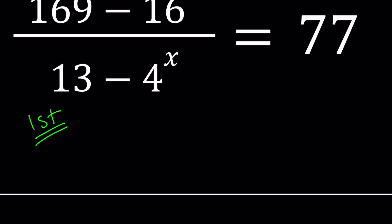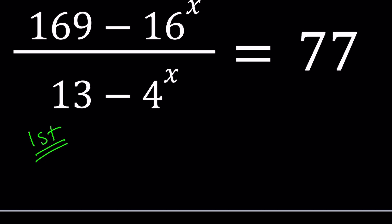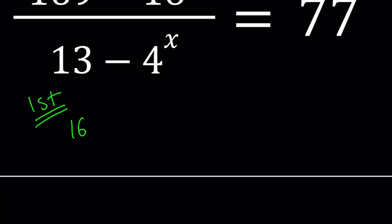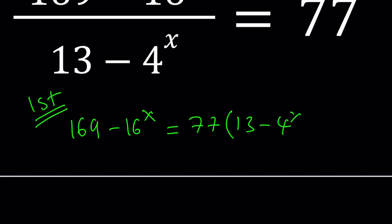For my first method, I want to go ahead and cross multiply. So this will give me 169 minus 16 to the power x equals 77 times (13 minus 4 to the power x). Now let's go ahead and simplify this expression by using the distributive property. So we're going to multiply 77 by 13.